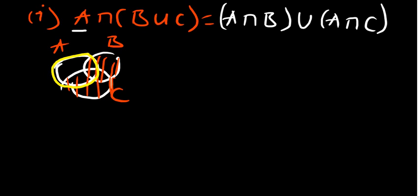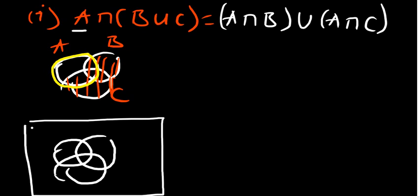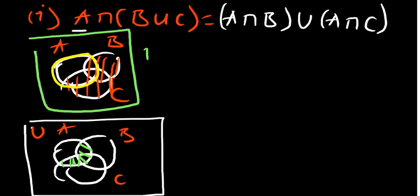The final diagram for the left hand side is going to be: you have your A, your B, and your C. The common region we're going to have is basically just the parts of B and C that overlap with A. We've shown the left hand side — you can indicate that shaded region is our B union C intersected with A.